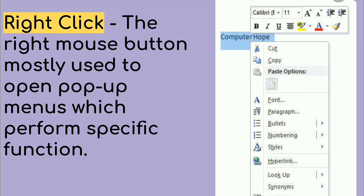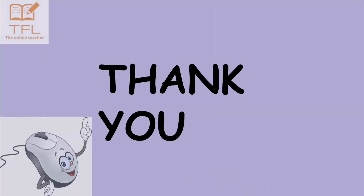If you select a word and right click, you get options. If you select a file and right click, the right click is used to open pop-up menus. So it opens pop-up menus. That's all, thank you.